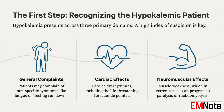The third category involves muscle function, which can go downhill fast. This is the neuromuscular effects. It might start as just simple weakness, but it can progress to flaccid paralysis. And in really extreme, prolonged cases, you could even get rhabdomyolysis, which brings its own set of risks for kidney failure. And you always have to be thinking about the diaphragm — is respiratory failure next?